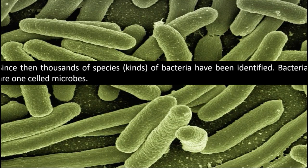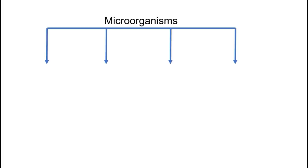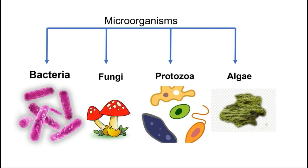Microorganisms are of four types: the first is bacteria, the second is fungi, the third is protozoa, and the fourth is algae. In the previous video we discussed these briefly, but now we will go into detail one by one, starting with bacteria.